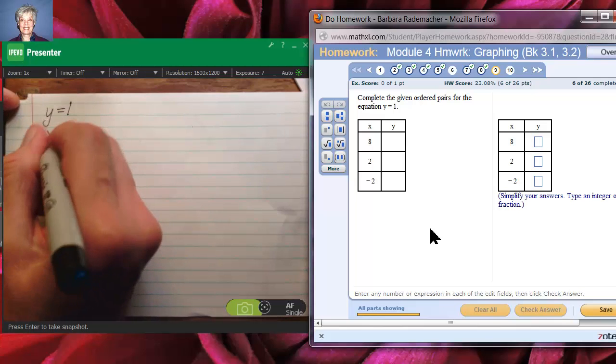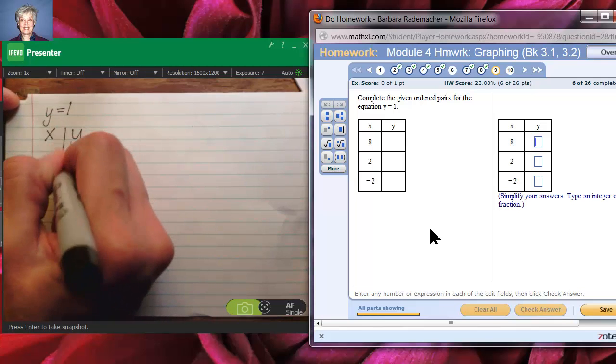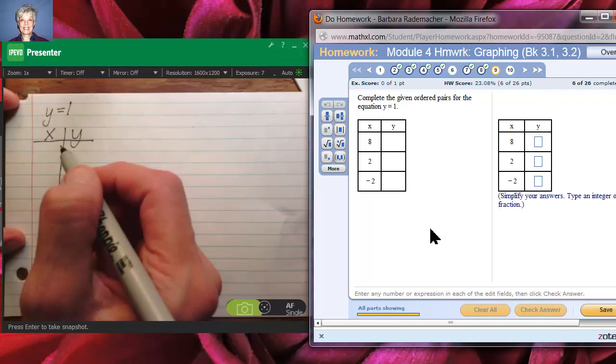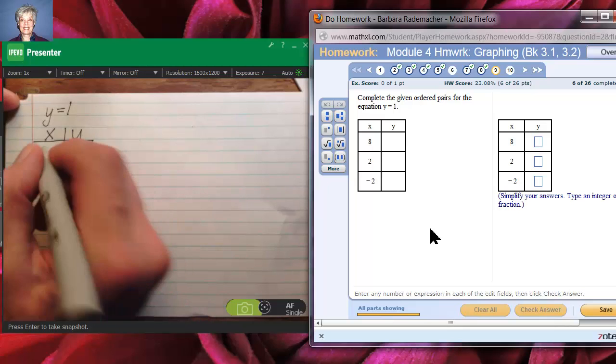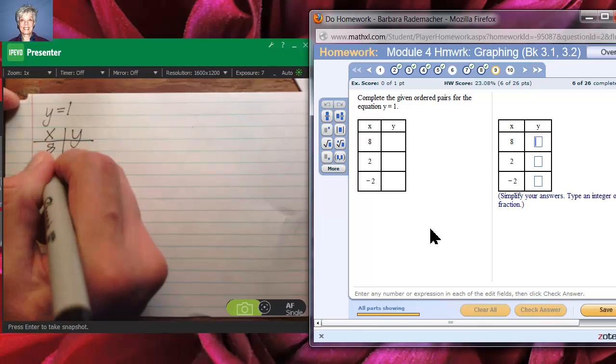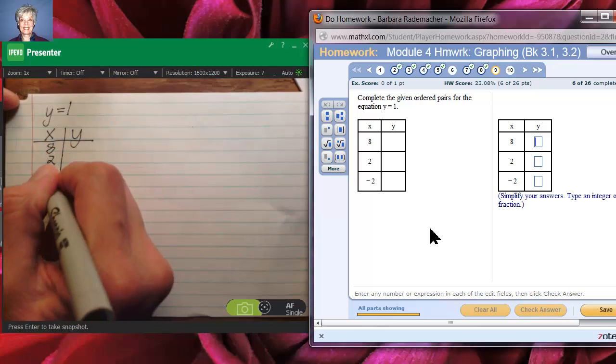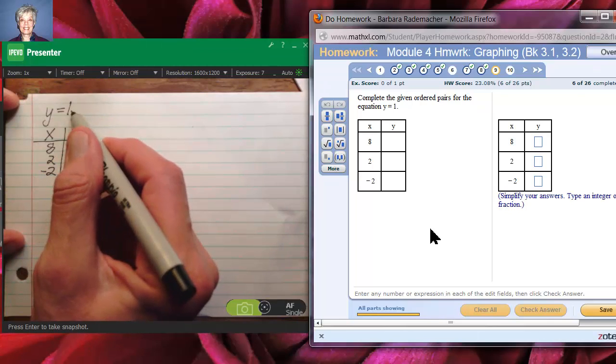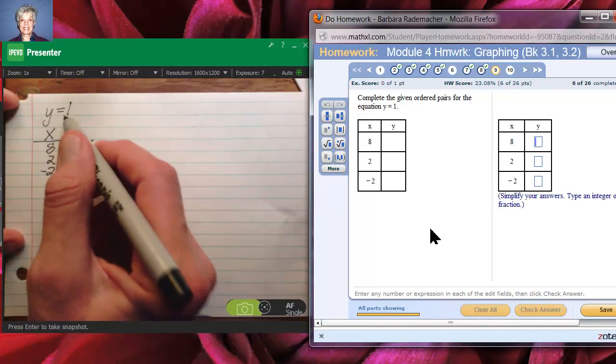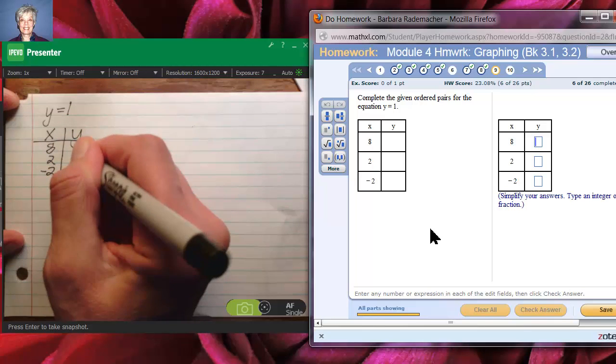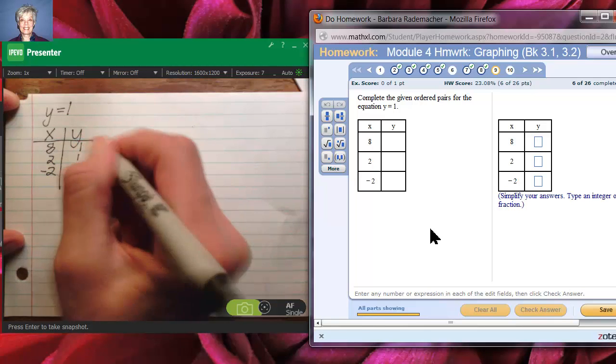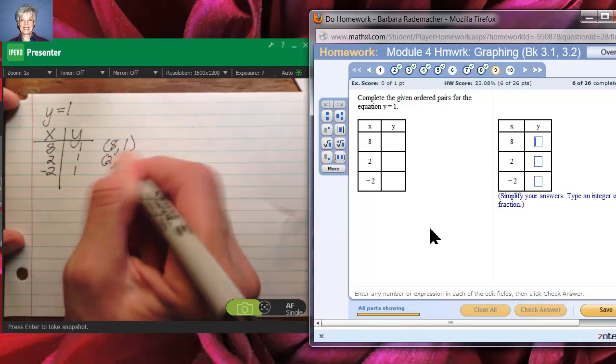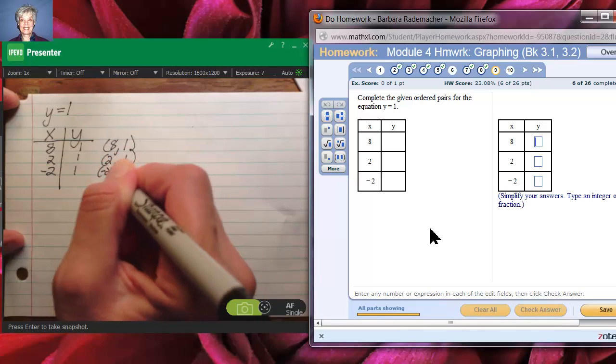And, again, we're given an x and a y table. You're probably getting a feel for how this works. There is no x in this equation for us to put numbers in. So, that means x can equal any old thing like 8, 2, or negative 2. The only thing that's important here is that y is always 1 because the equation is y equals 1. So, we'll put a 1 and a 1 and a 1, which means we have the points (8, 1). We have the point (2, 1). And we have the point (negative 2, 1).